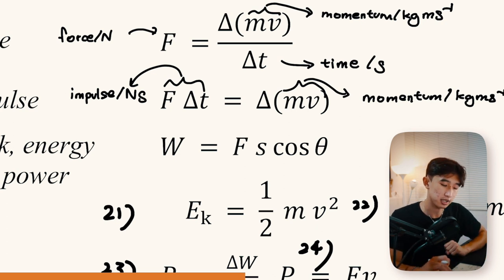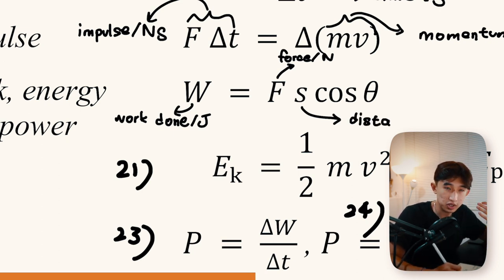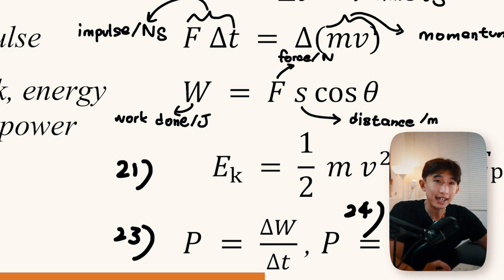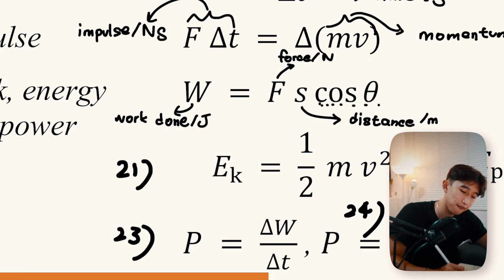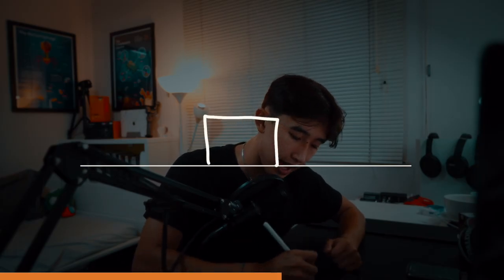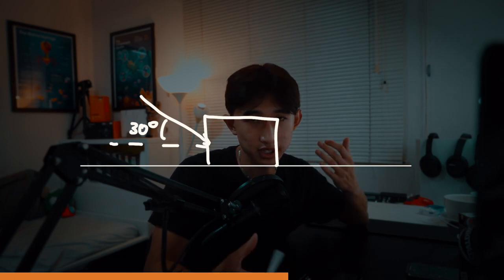Work done (in joules) = F × d × cosθ, where F is force in newtons and d is distance in metres. If the force is applied at angle θ to the direction of motion, we apply cosθ. For example, if a box is being pushed at 30 degrees, work done = F × d × cos30°.